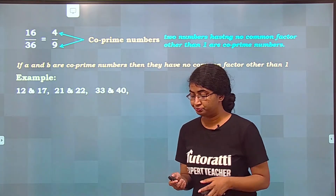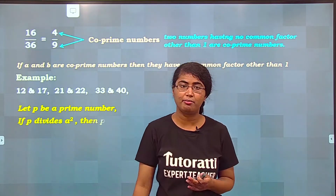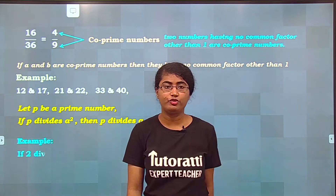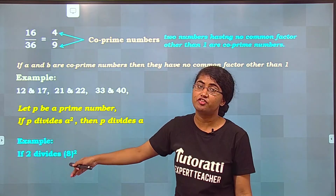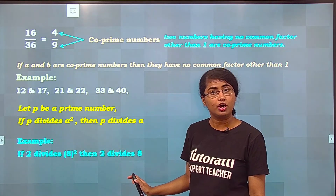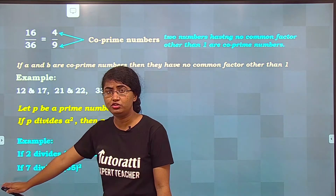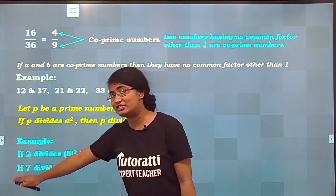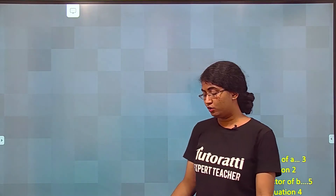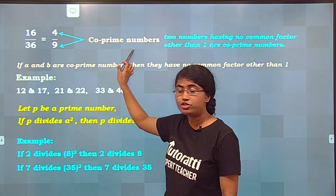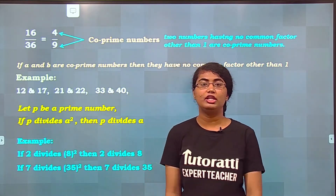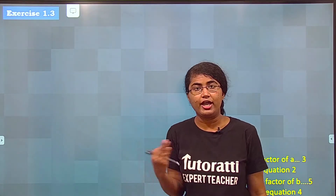Let's look at more examples. If 2 divides 8 squared — 8 squared is 64, which is divisible by 2 — then 2 also divides 8, its root. One more: if 7 divides 35 squared, then 7 will also divide 35. The concept is clear. Make sure you keep in mind these two terms — co-prime numbers and this axiom — because we will be solving exercise 1.3 and these two concepts are very important.